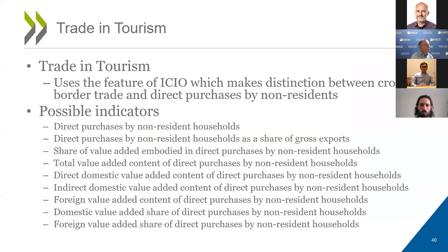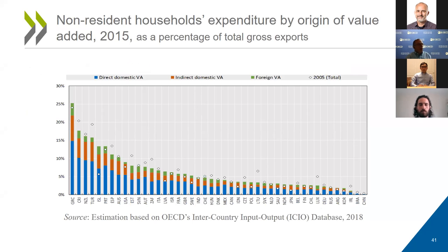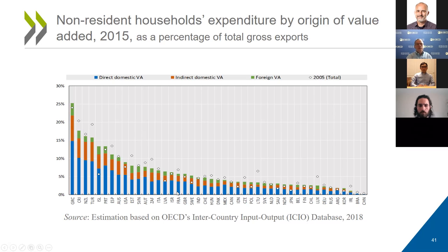These new indicators we are working on include trade in tourism, which measures cross-border purchases by non-residents. For a country like Greece, about 25% of the value added of exports is associated with purchases by non-residents, making it an indicator of countries more dependent on tourism for exports of their goods and services.